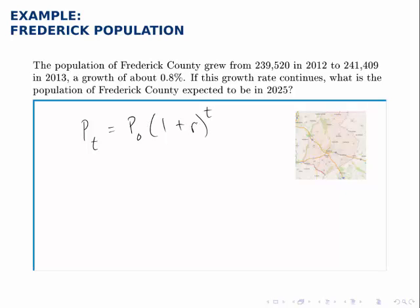We need to pick a year 0 to use as an initial population. We can pick either 2012 or 2013 as the initial point, and either one's fine as long as we're consistent. Here, let's pick 2013 to be year 0. So the population at any given point in time will be the population in 2013, times 1 plus 0.8%, so 1.008 raised to t.